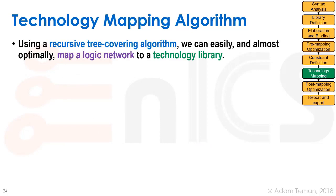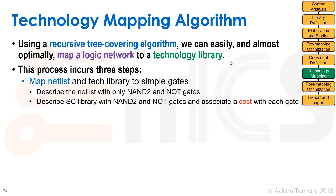The technology mapping algorithm uses a recursive tree covering algorithm, and we can almost optimally map a logic network to a technology library in three steps. The first step is mapping the netlist and the technology library to simple gates — we take the entire netlist of generic gates and break it down to two-input NAND gates and NOT gates, which form a universal set. Similarly, we describe each standard cell using only NAND and NOT gates, and assign each standard cell a cost.